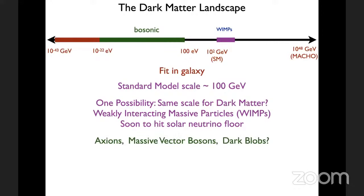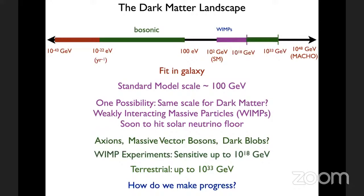There's an enormous range of masses and a variety of other dark matter candidates: axions, massive vector bosons, dark blobs — all kinds of things. If any experiment discovered dark matter anywhere in this parameter space, the next day a hundred theorists would write papers saying that's exactly the candidate they knew had to exist. It's incredibly easy to write down dark matter models. So the real scientific question is: given 60 orders of magnitude in parameter space, how do we systematically probe large chunks of it?